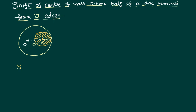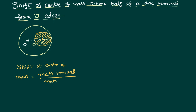We have discussed in a previous post and derived a formula: the shift of the center of mass when a portion of mass is removed equals mass removed divided by mass remaining, multiplied by the distance between the original center of mass and the center of mass of the removed portion.